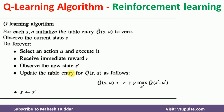Now you need to update the table entry Q-cap of S,A as follows. Q-cap of S,A equals R — the immediate reward — plus gamma, the discount factor, multiplied by the maximum of Q-cap of S',A' for all A'. That is, from the next state S', we find the maximum Q-value over all possible actions A', multiply by gamma, and add it to the immediate reward.